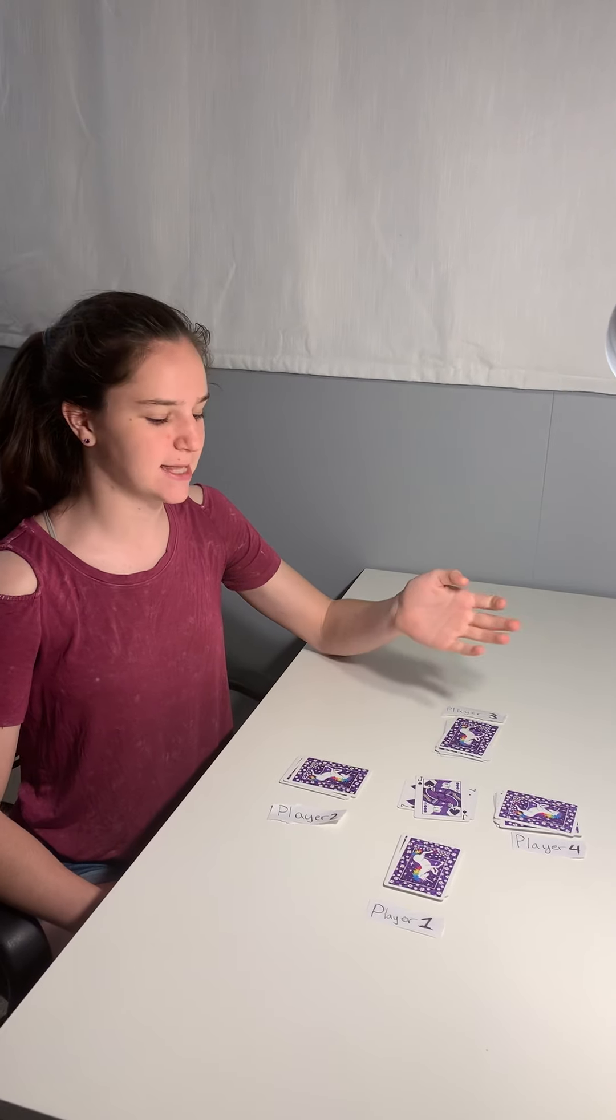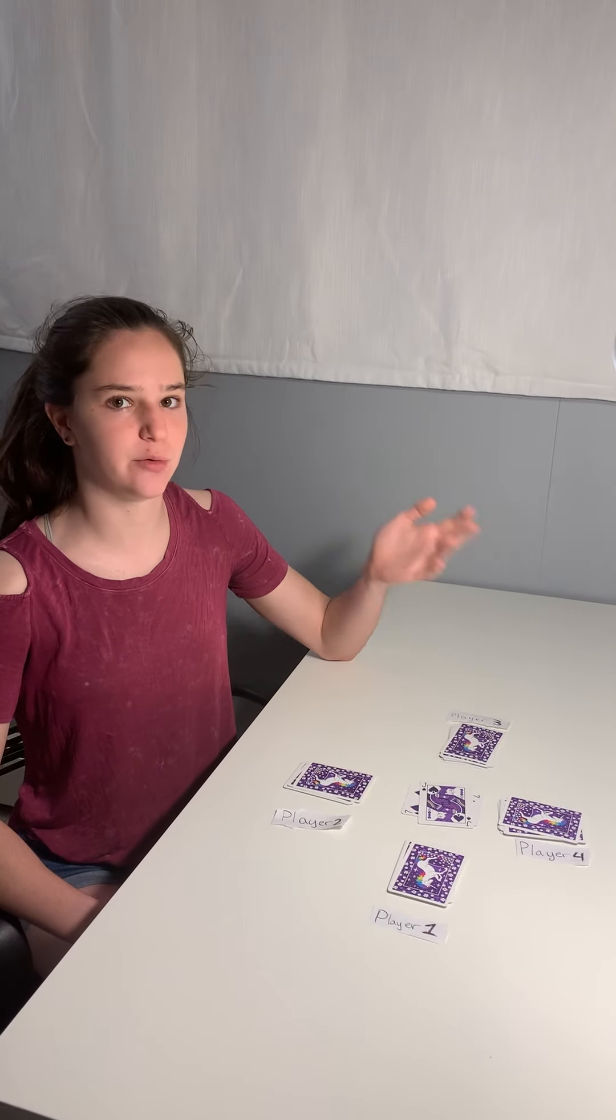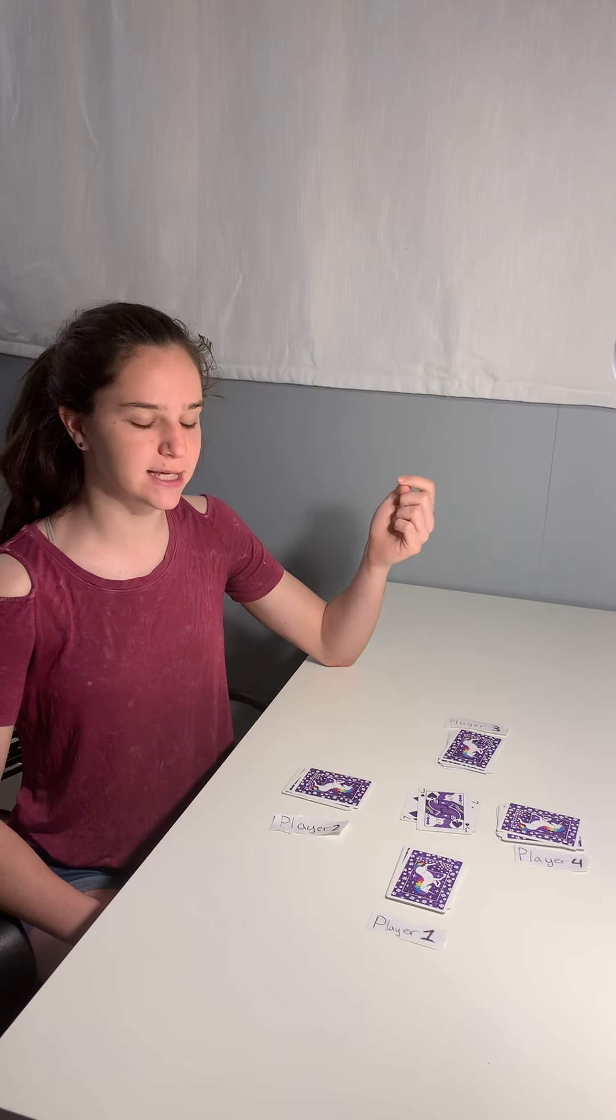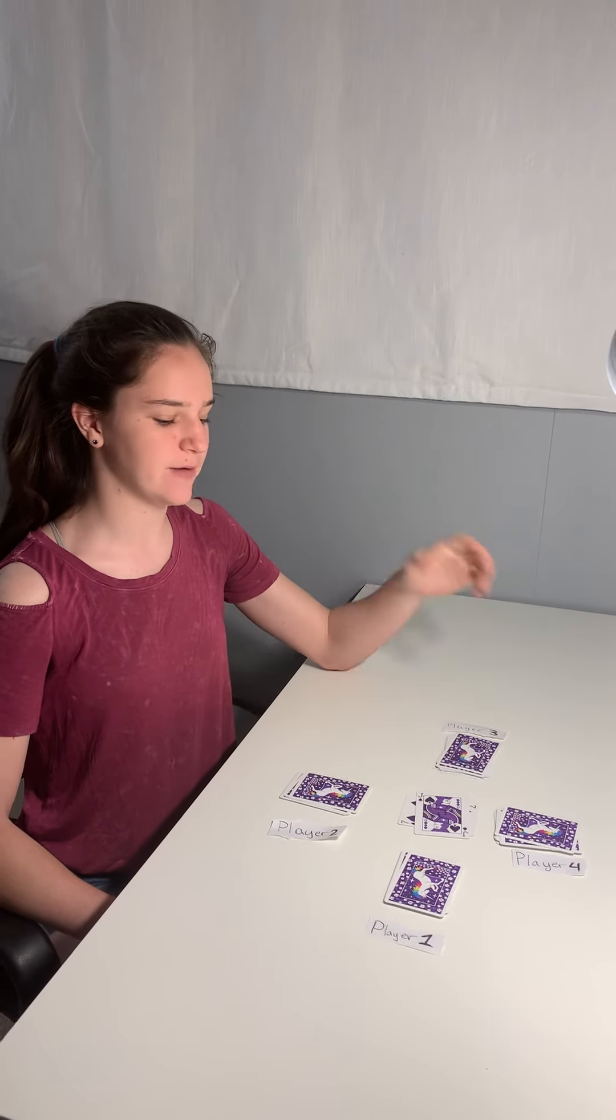A jack means that player four would get one chance. If it were a queen, they would have two chances. A king would give them three, and an ace would give them four chances to play a face card.